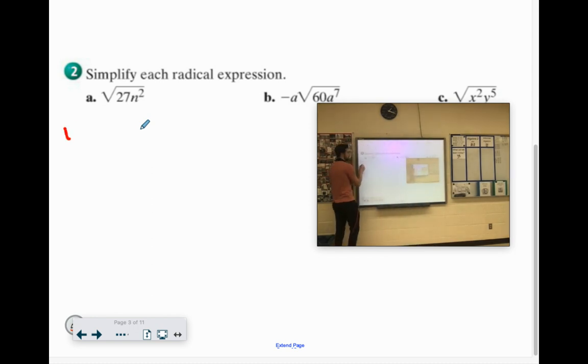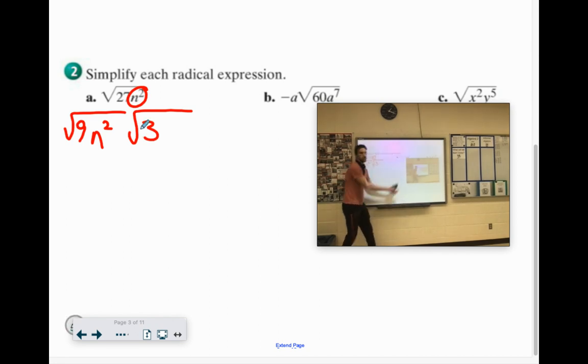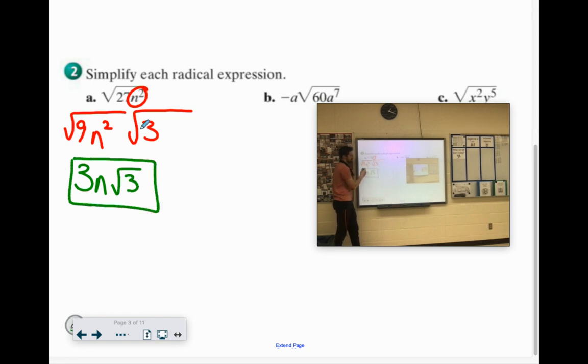So 27, the perfect square is 9 and it's 9 times 3. Now remember the exponent needs to be even for it to be perfect. That's even. So we can put them all there with the perfect stuff. There are no n's in the trash pile. Square root of 9 is 3. Square root of n² would be n to the first. We just divide the exponent by 2. Then you got your √3.